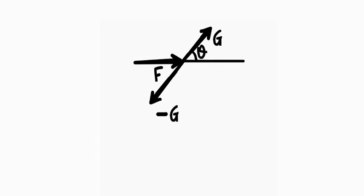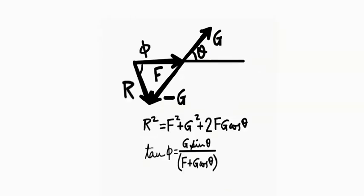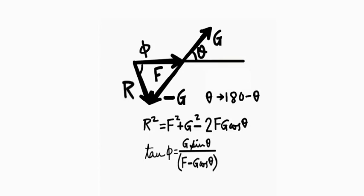Now for subtraction of one vector from the other: to find f minus g, we take the magnitude of g and reverse its direction, so that becomes minus g. We can represent x as equal to minus g, where the magnitude of x and g are the same but the direction changes, so the resultant equals f minus g, or equivalently f plus x. Subtraction of vectors is nothing but the addition of vectors with the direction reversed. Using the same formula but substituting 180 minus theta for the angle, the result is: r² = f² + g² − 2fg cos θ, and tan φ = g sin θ / (f − g cos θ). That's how we subtract vectors.